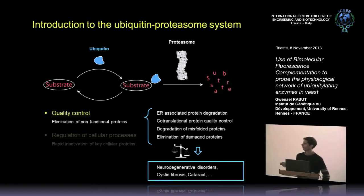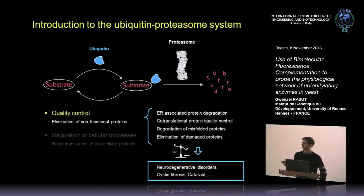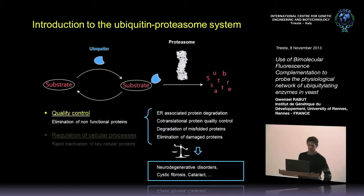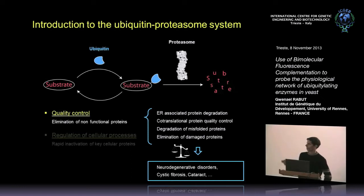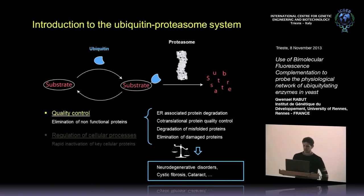Any imbalance in those processes can have dramatic effects in the cell and lead to disease. This is particularly the case for neurodegenerative disorders. Next week's talk about ERAD will explain its role in Huntington's disease. Quality control is very important and accounts for most of the ubiquitination events that occur in the cell.